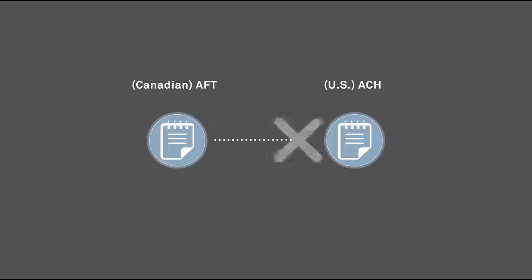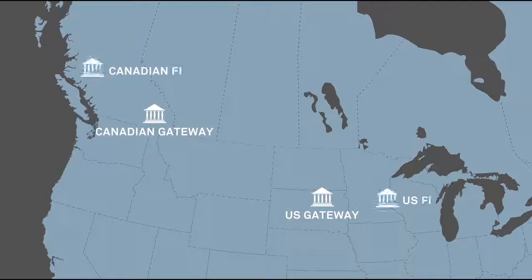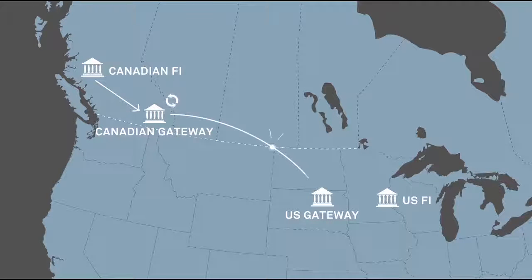The American equivalent to AFT is an ACH transaction. ACH files and standard 005 files cannot talk to each other, and yet our two countries do an enormous amount of cross-border transactions. Currently, to facilitate cross-border AFTs, one financial institution on each side of the border acts as a gateway and translates the files sent from one side of the border into the appropriate format to be read and processed on the other side.